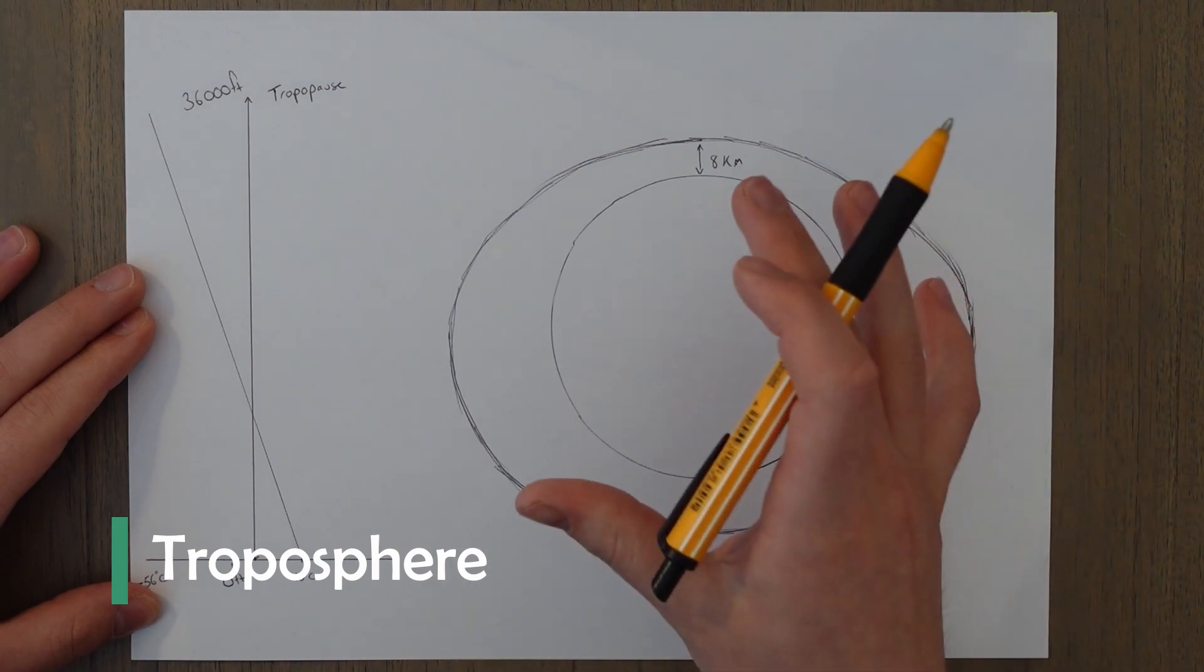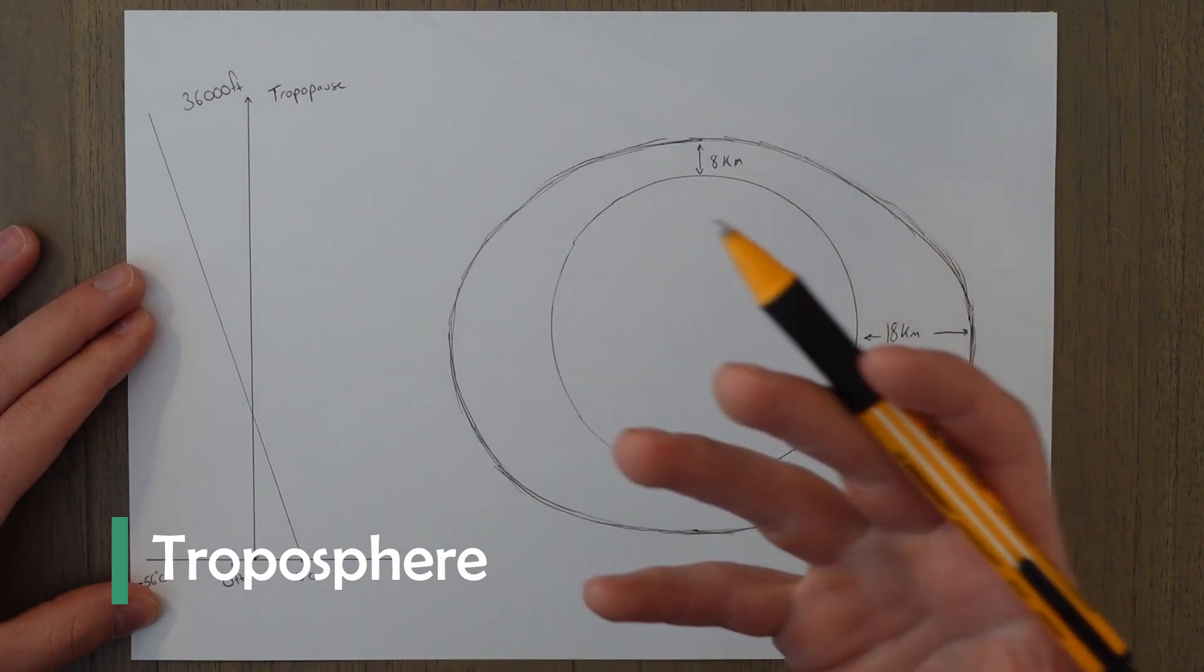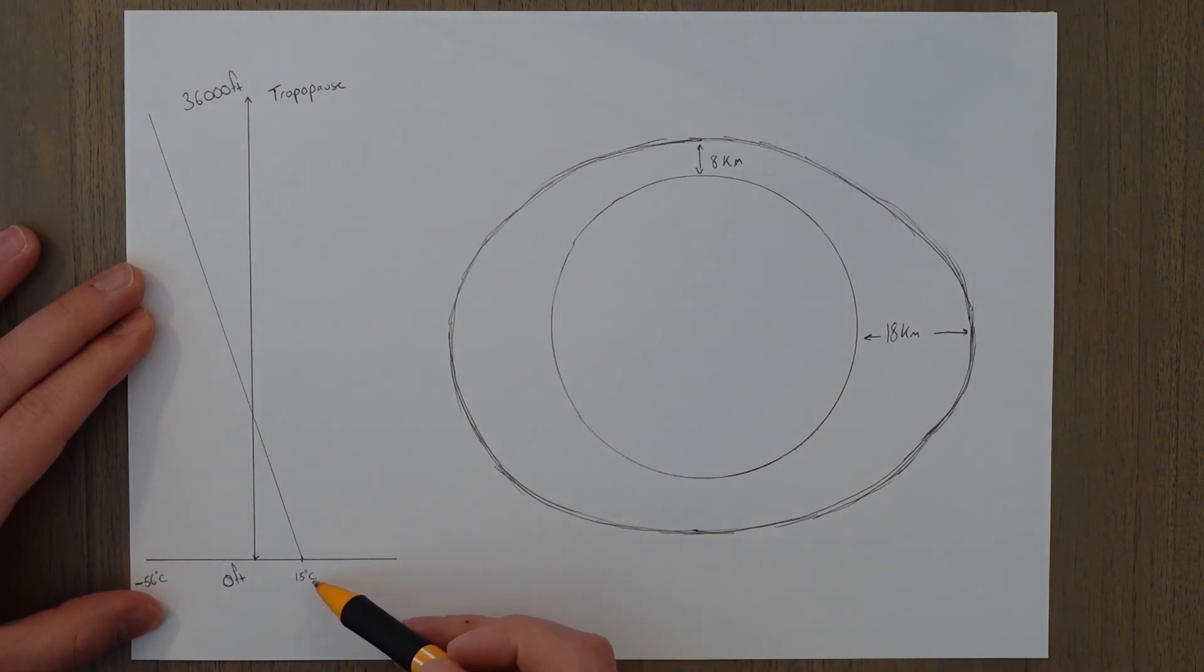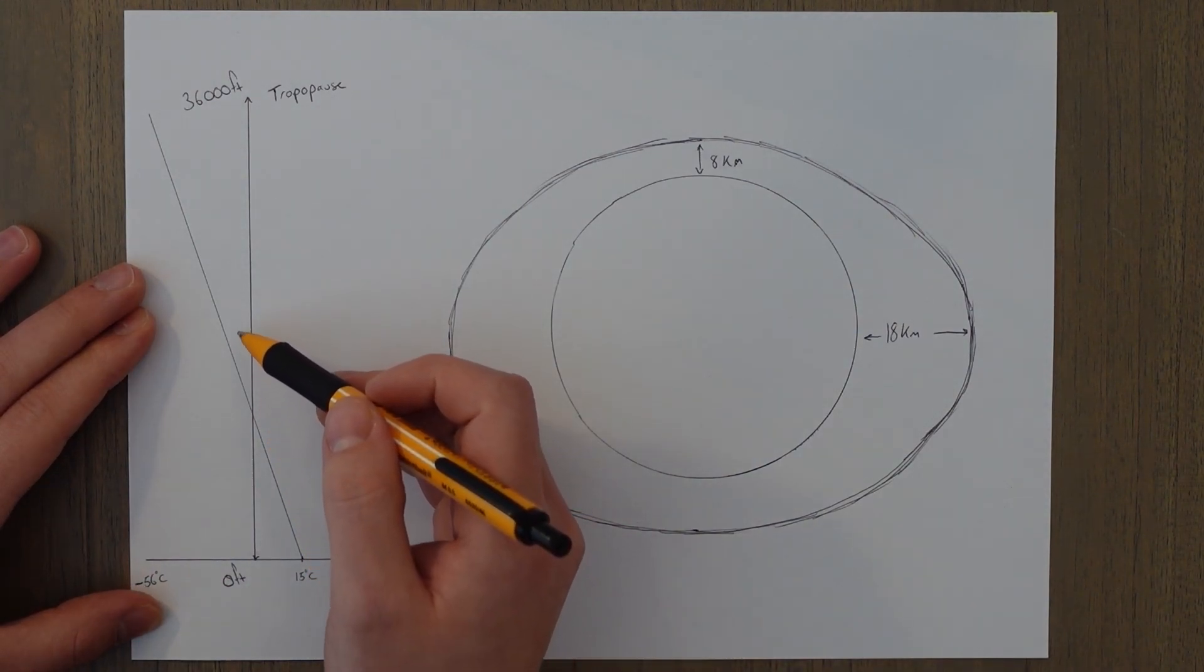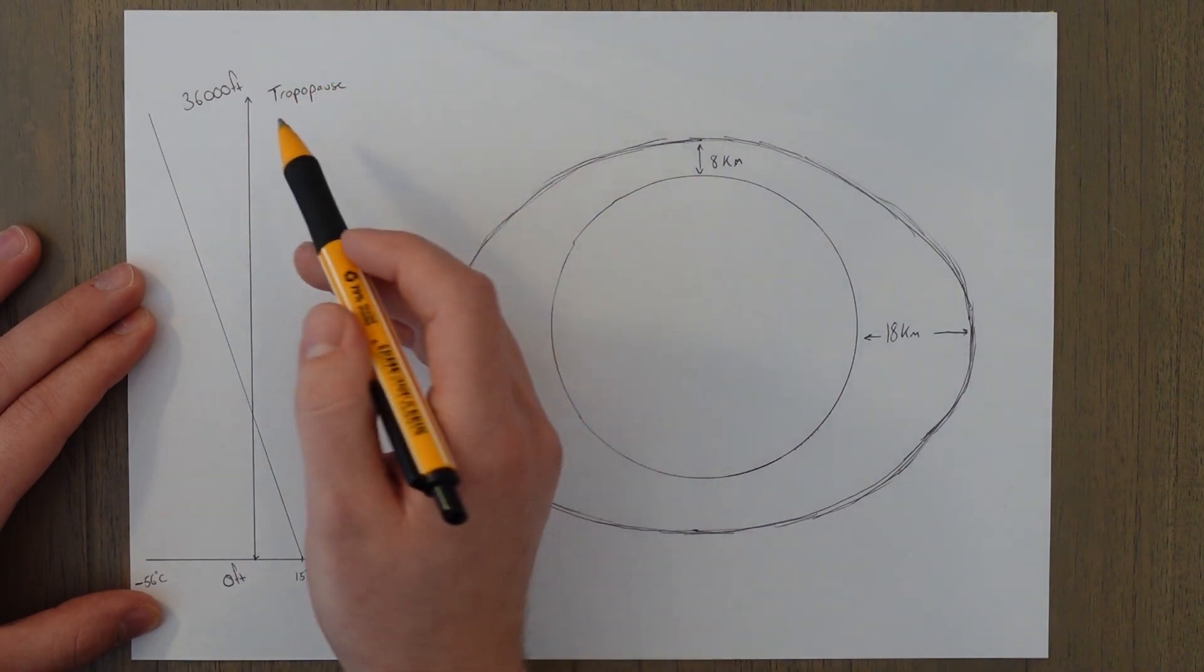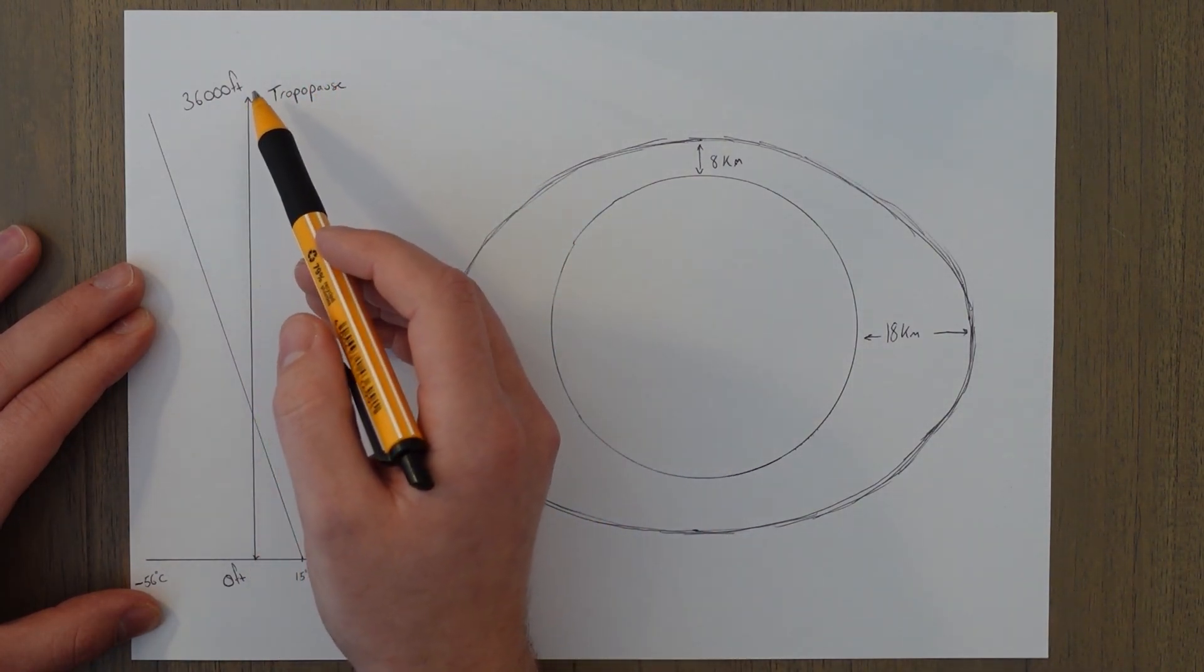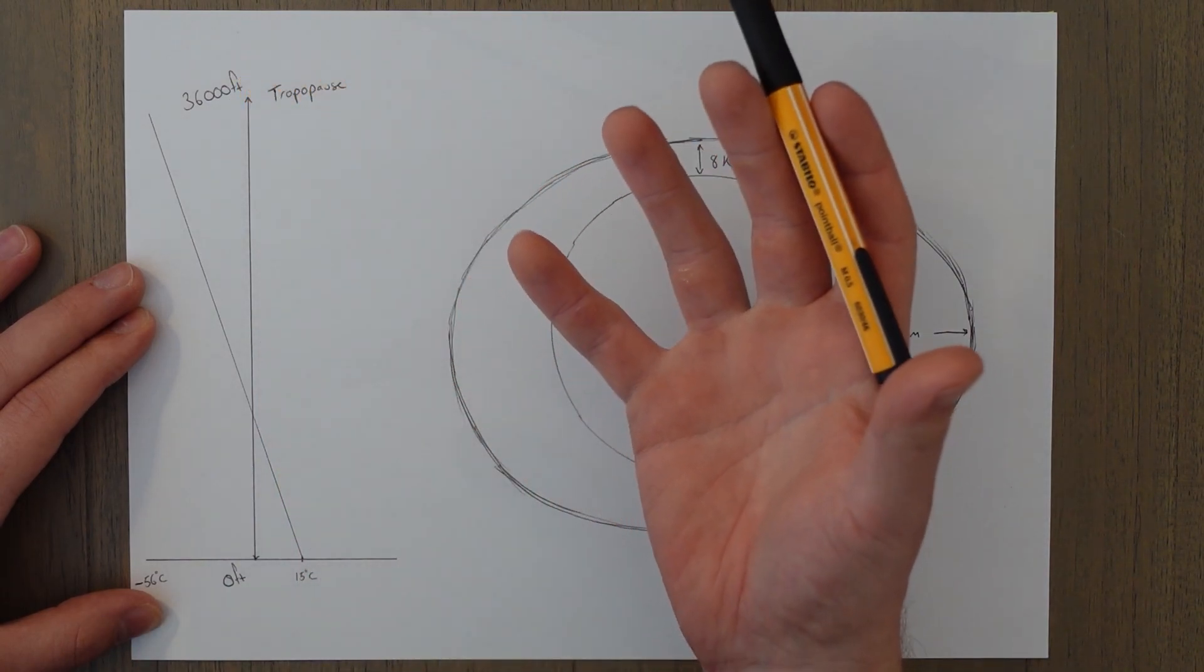First down near the earth's surface is the troposphere. In this layer temperature reduces with increasing altitude up until that level which is known as the tropopause, which has an average height of about 36,000 feet or 11 kilometers.